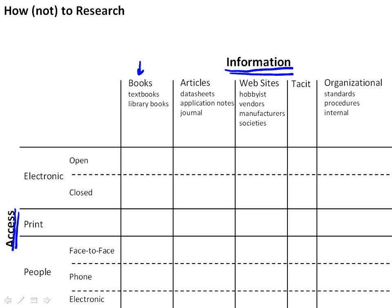We can access books electronically. For example, Google has some books online and anybody has access to them. There are other books that require a subscription, such as from a publisher, in order to access the electronic version. So books can be accessed electronically either in an open fashion, if available to the world, or in a closed fashion, where you have to pay a subscription fee or belong to an organization.